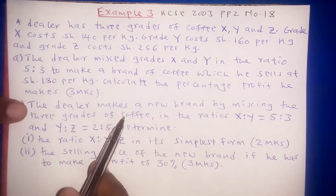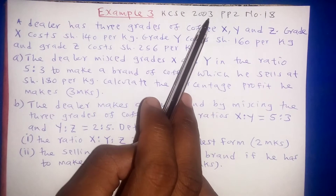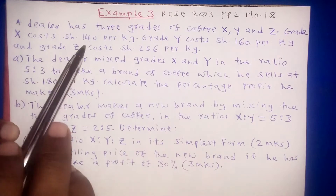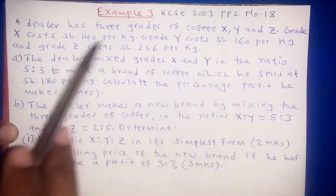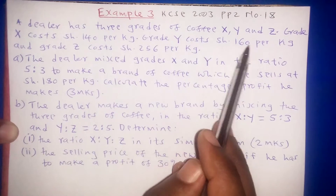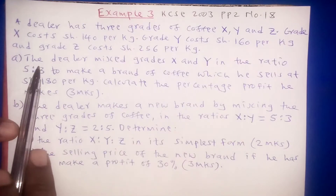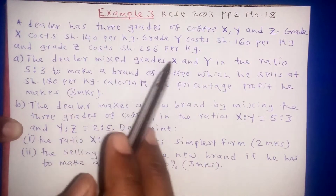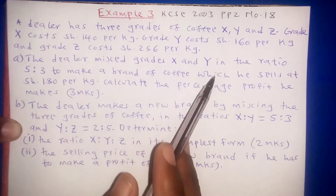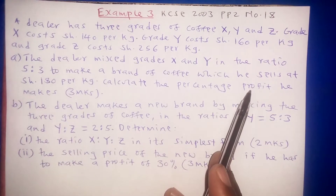Dear friends and welcome to our third lesson on mixtures. We want to tackle a past KCSE question done in 2013, paper 2, question number 18. The question reads that a dealer has three grades of coffee: X, Y, and Z. Grade X costs 140, grade Y costs 160 per kg, and Z costs 256 per kg. For part A, the dealer mixes grades X and Y in the ratio of 5 to 3 to make a brand of coffee which sells at 180 per kg. Calculate the percentage profit that he makes.